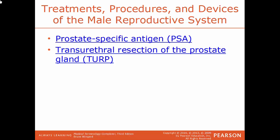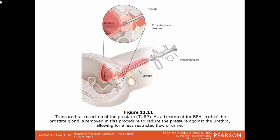PSA, prostate-specific antigen, is an enzyme produced by the prostate in very high concentration, found in the blood of men with prostate cancer. Checking PSA levels is a quick blood test to check for the possibility of prostate cancer. TURP, transurethral resection of the prostate gland, is a procedure done to relieve moderate to severe urinary symptoms caused by an enlarged prostate. A section of the prostate gland is removed to treat BPH, reducing pressure against the urethra and increasing urine flow.